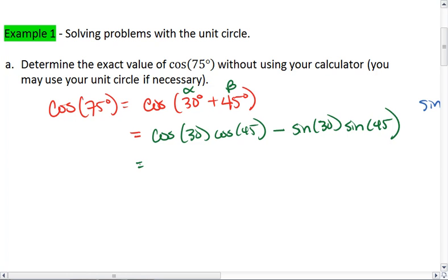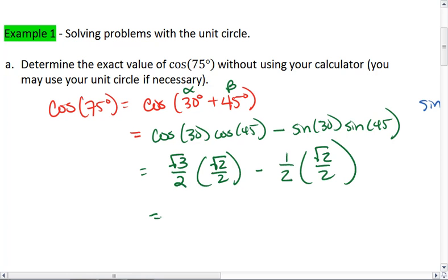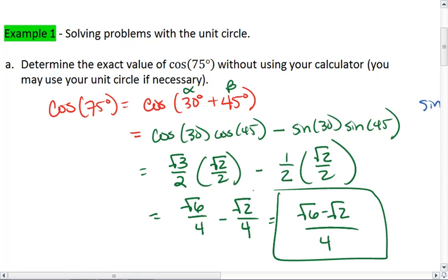We remember from before that cosine of 30 is going to be rad 3 over 2. Cosine of 45 is rad 2 over 2. Sine 30 is 1 half and sine 45 is rad 2 over 2. Thus we get rad 6 over 4 minus rad 2 over 4, which equals rad 6 minus rad 2 all over 4. And that is our final answer.